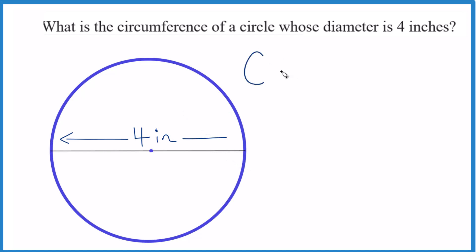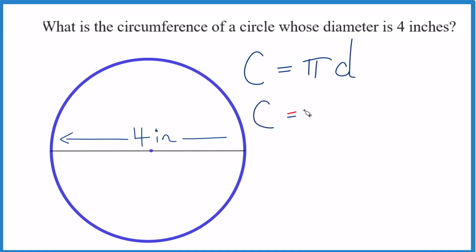Circumference equals pi times D, where D is the diameter — that's what we've been given. So circumference equals pi times four.